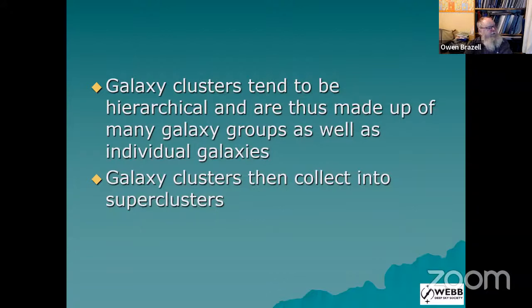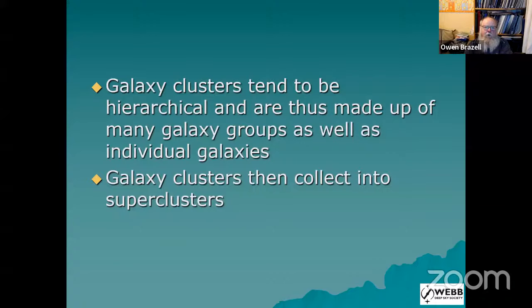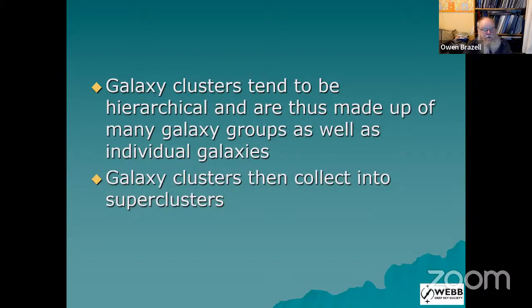Galaxy clusters are not necessarily one blob — they tend to be hierarchical. In many cases, even in the current universe, clusters are still coming together. The Virgo cluster, perhaps the best known cluster in the sky, actually consists of probably four separate groups of galaxy clusters which are still combining — so it's a young cluster that hasn't quite got together. Galaxy clusters also like to collect into superclusters, which can be very large objects and are probably the largest groupings we're going to see.